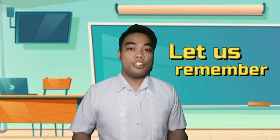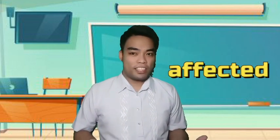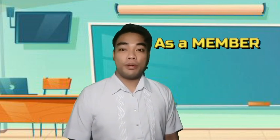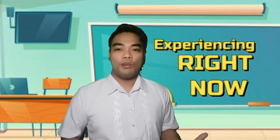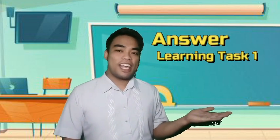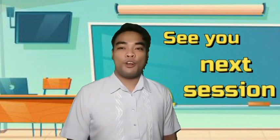Let us always remember that once the structure of the system fails to perform its function, the entire body system will be affected — just like in the organization or community where we live in. If we fail to perform our responsibility as a member of the community, the entire community will be affected. Always remember that our actions, whether good or bad, affect the community where we live in. For your home activity, try to answer Learning Science number one on your PIVOT module. See you in our next session as we explore and learn the majestic and interesting world of science.